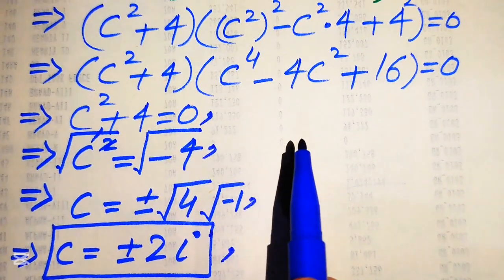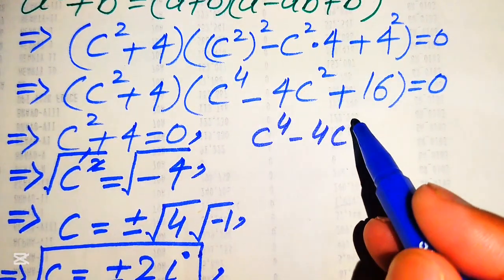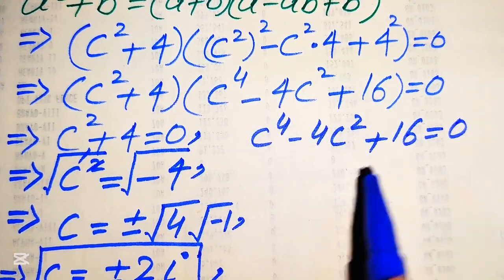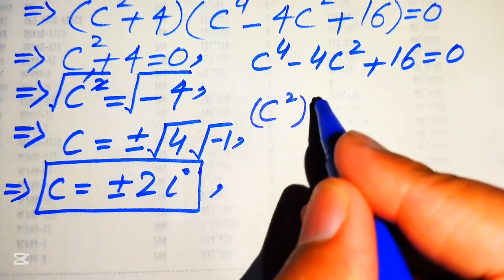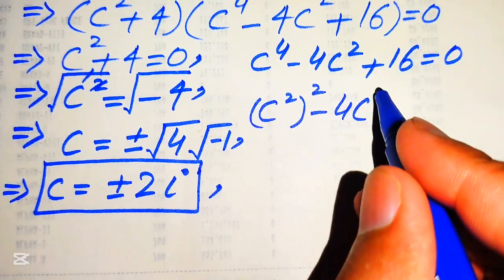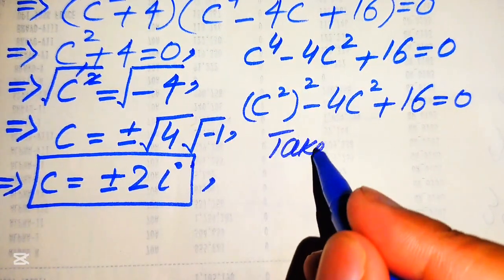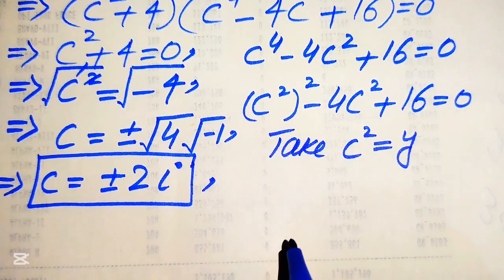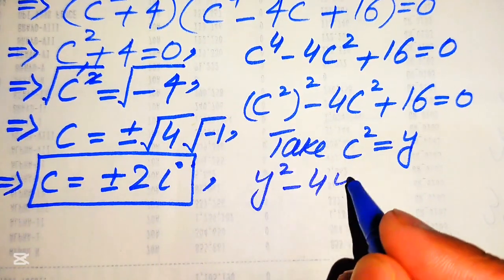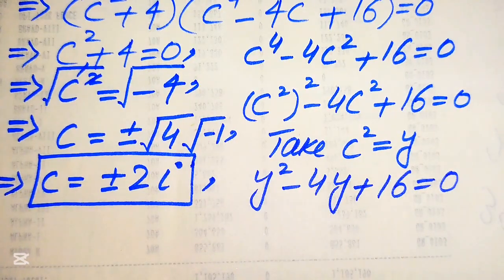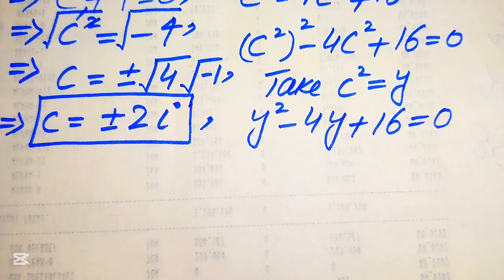For Case 2, we set c⁴ - 4c² + 16 = 0. We rewrite c⁴ as (c²)², then substitute y = c², transforming the equation into y² - 4y + 16 = 0, which is a quadratic equation in y. We apply the quadratic formula to solve it.